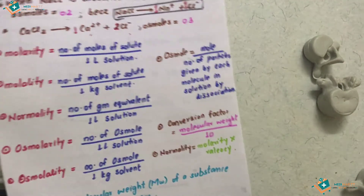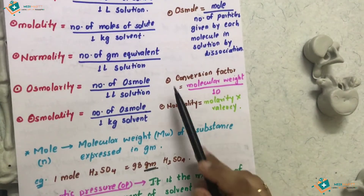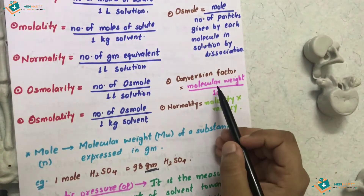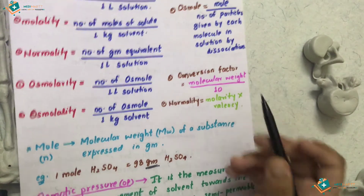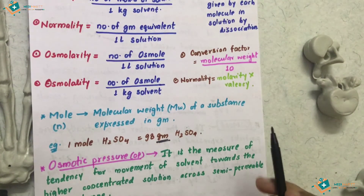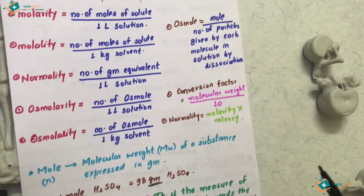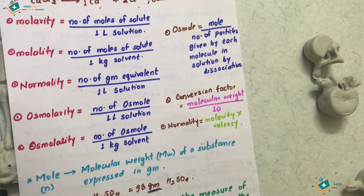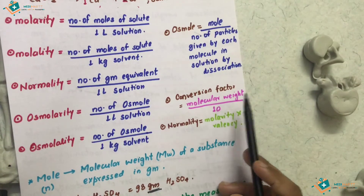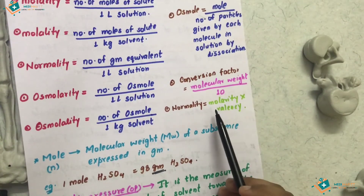The conversion factor is molecular weight divided by 10. For example, sulfuric acid has a molecular weight of 98 grams, so 98 divided by 10 gives a conversion factor of 9.8. To get normality from molarity, multiply by valency.